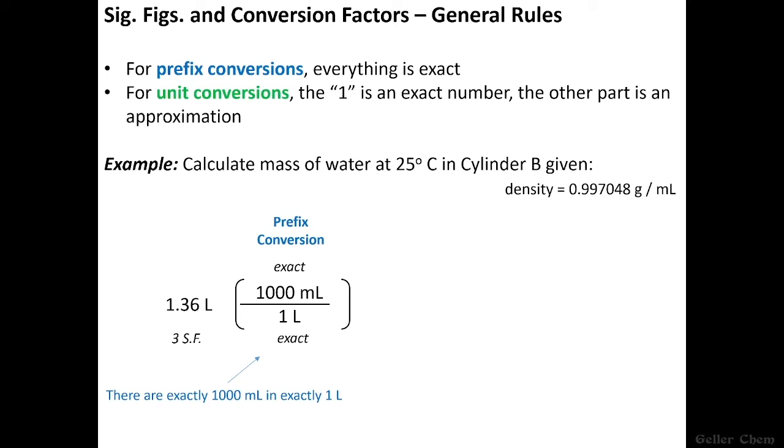Whereas when we do the unit conversion next, where we go from milliliters to grams, well, now we have some potential error. Notice how specific this number is. That is an estimate of how many grams there are per milliliter of water. We could, in principle, measure it more accurately. Maybe it's 0.997048023 grams per milliliter. But in this particular measurement of the density, we know it to six sig figs.